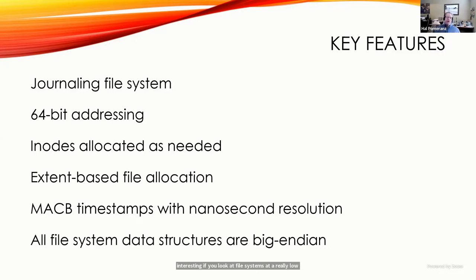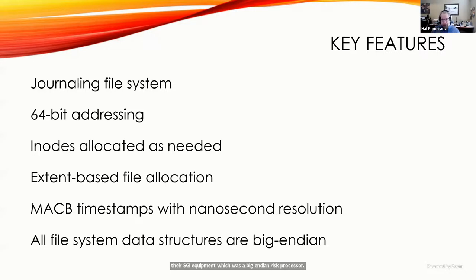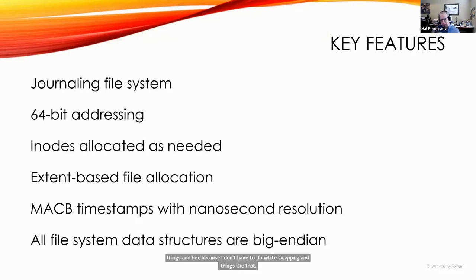One interesting thing about XFS is that it's an entirely big-endian filesystem — all data is arranged in big-endian format even on little-endian processor architectures like Intel CPUs. This is historical, because when the filesystem was developed, SGI used MIPS processors, which were big-endian RISC processors. This actually makes my life easier when looking at hex, because I don't have to do byte swapping.